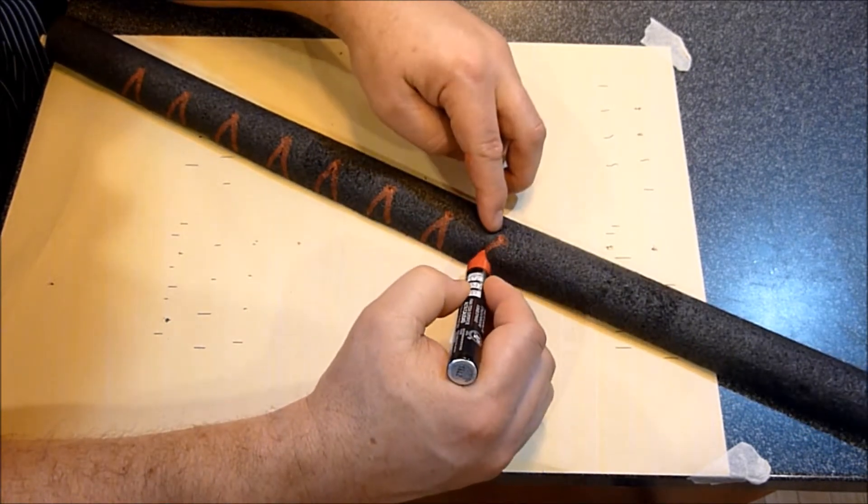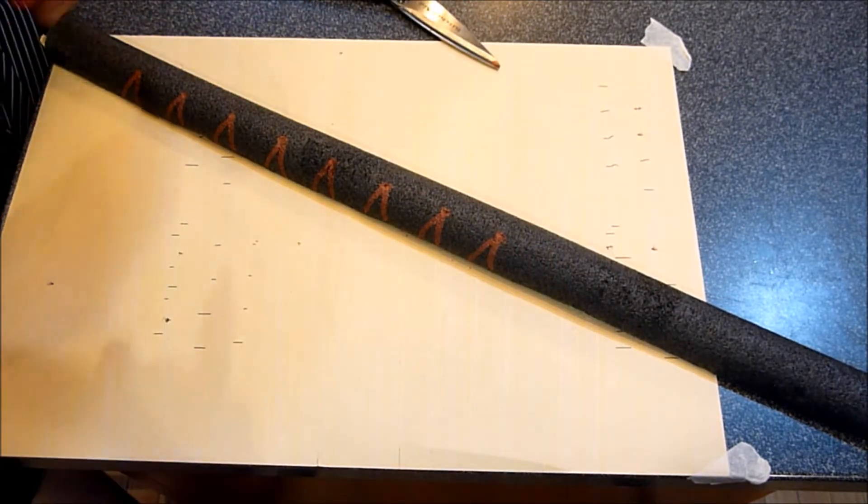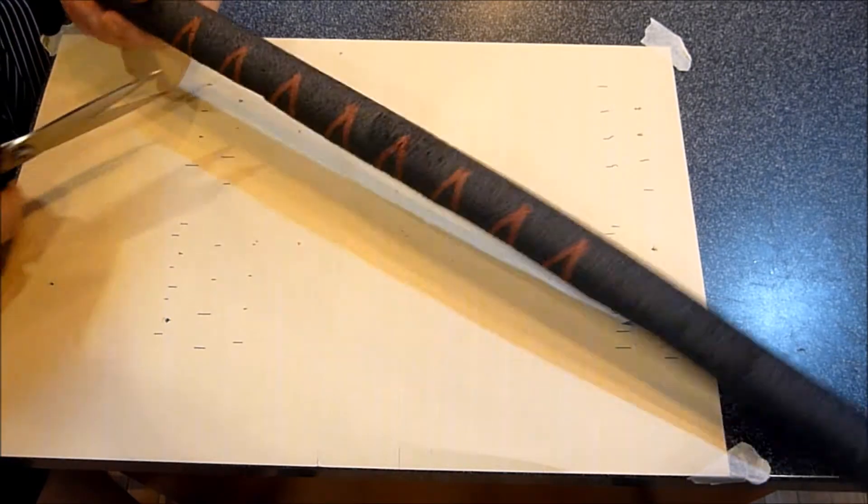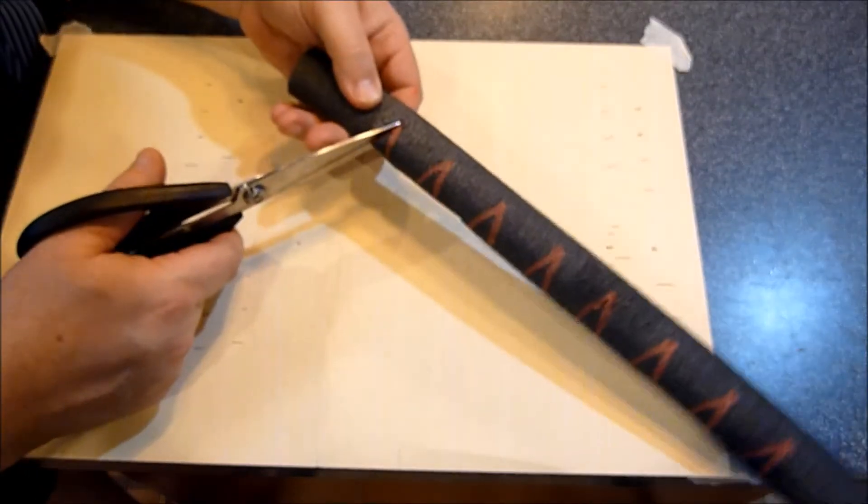This is only a one foot section that I'm doing. You might want to do a little bit longer, or you can have the kids start with a foot and then go from there. And then you just cut all your triangles out.